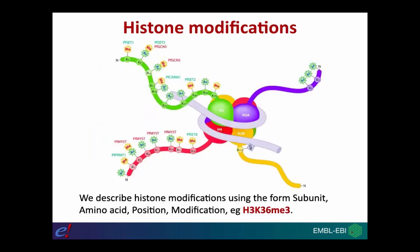Let's look at histone modification in more detail. The histone complex is made up of eight different proteins — four different homodimers: H2A, H2B, H3, and H4. Together these form the histone octamer, and the DNA is wound around that complex. The individual histone proteins are quite globular, but the N-terminal tail extends away from the complex and can be post-translationally modified. We have a particular nomenclature system for describing these modifications.